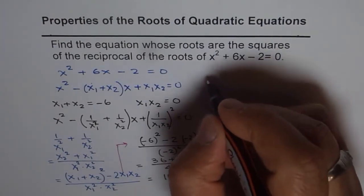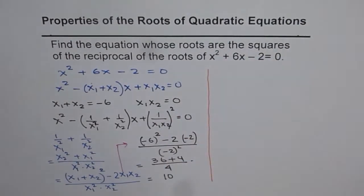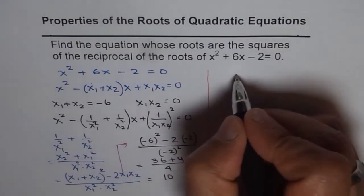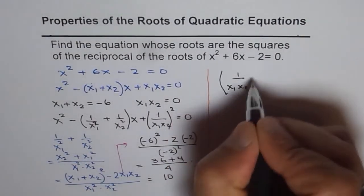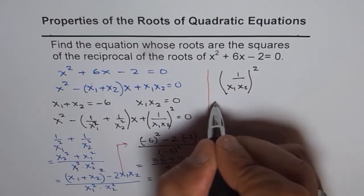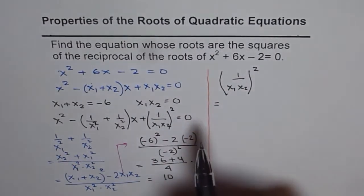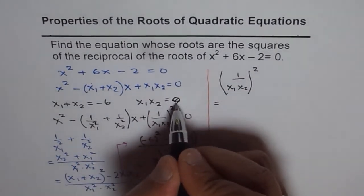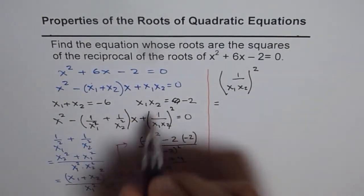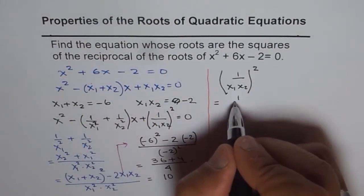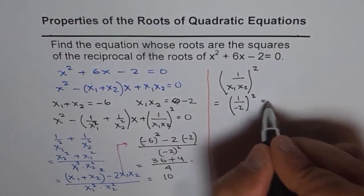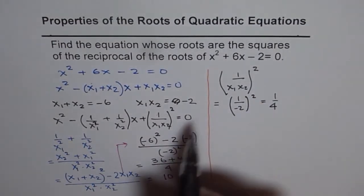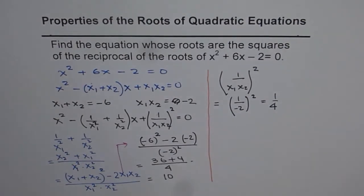Now let's find the product. That means 1/(x1·x2)² equals what? We know x1·x2 = -2, so it is 1/(-2)², which is indeed 1/4. So the product of the reciprocal squares is 1/4.